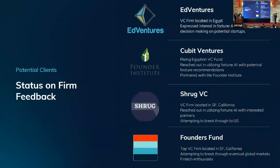We've reached out to several VCs: AdVentures, who were interested in Fortune AI for making decisions on potential startups; Qubit Ventures, partnered with the Founder Institute for global connections; Shrug VC, a San Francisco-based firm we believe Fortune AI aligns with, targeting US market entry; and finally the Founders Fund in California, to help us break into global markets worldwide.